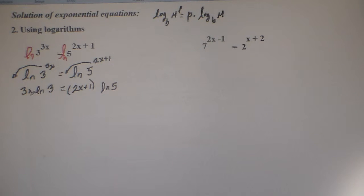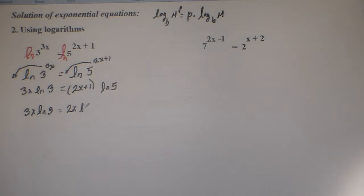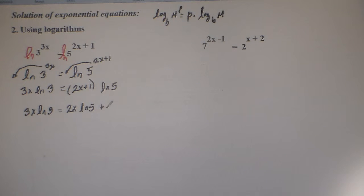There is a product: 3x ln of 3. Then we apply the distributive property and we multiply 2x times ln of 5. Positive times positive is going to be positive, and then 1 times ln of 5, which is going to be ln of 5.